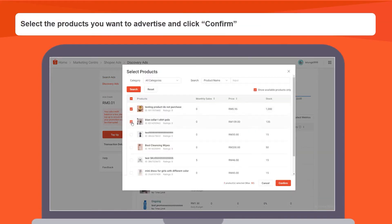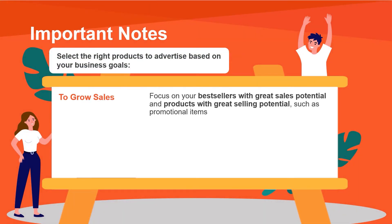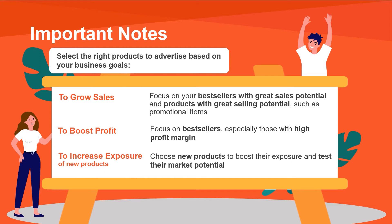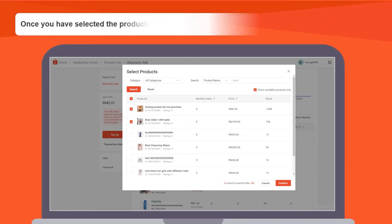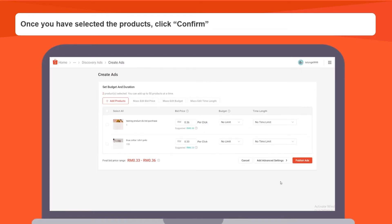Select the products you want to advertise. If you're looking to grow sales, focus on best sellers with great sales performance and products with great selling potential such as promotional items. To boost profit, focus on best sellers, especially those with a high profit margin. To increase exposure of new products, choose new products to boost their exposure and test their market potential. Once you have selected the products, click the confirm button.